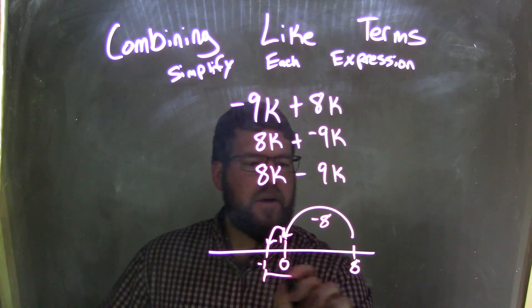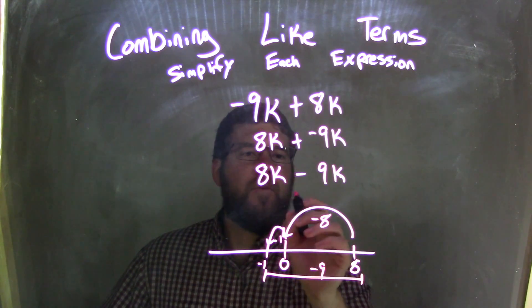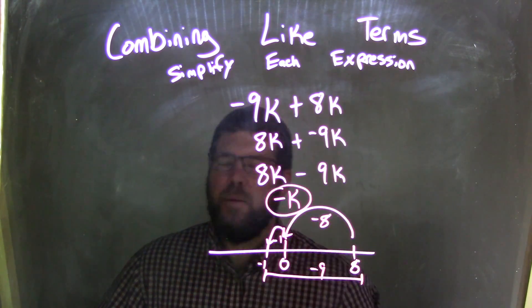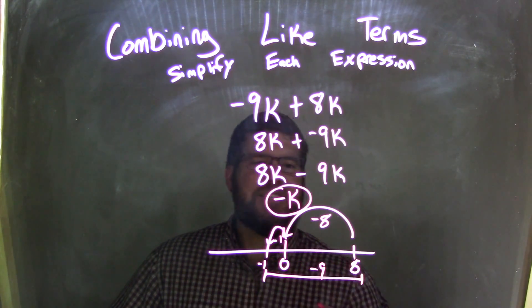And then overall here is minus 9. And so my final answer here would be negative k. Now notice I didn't put a negative 1 up front. It's just negative k.